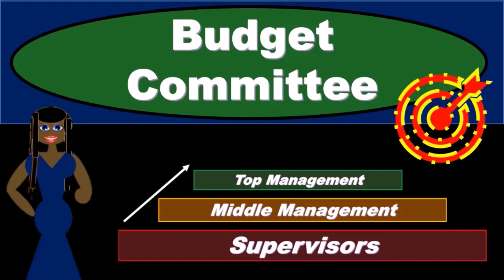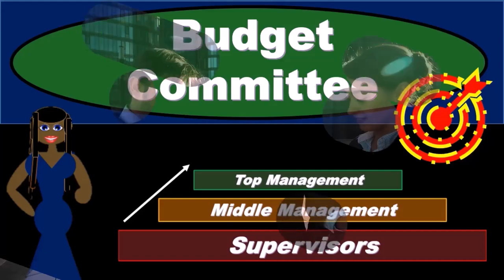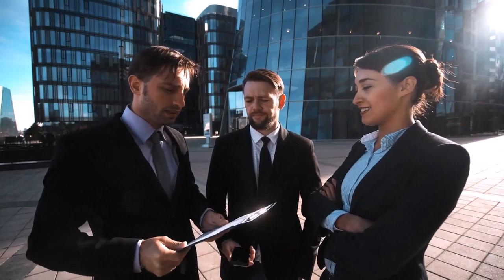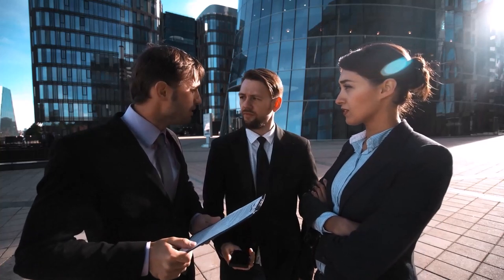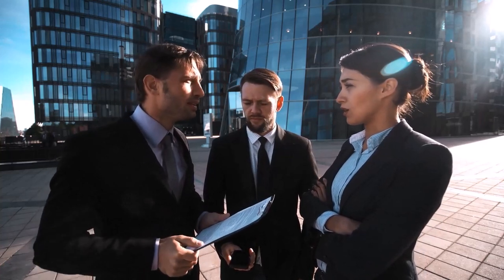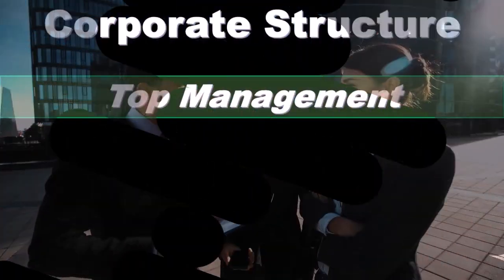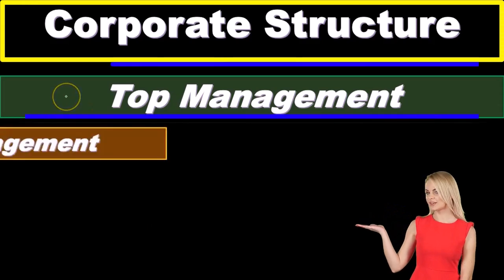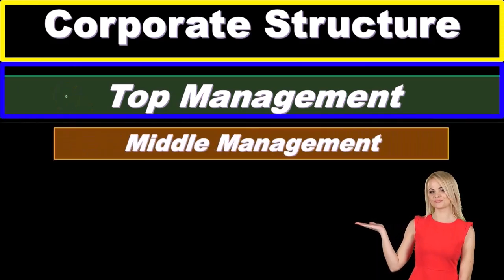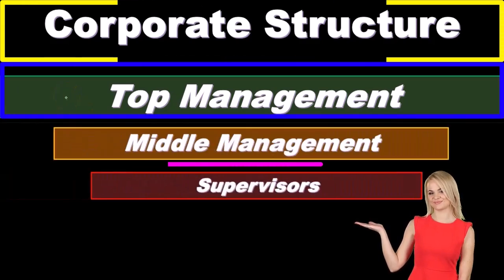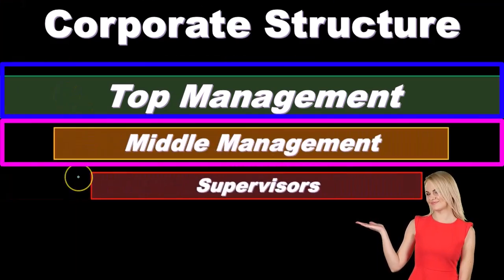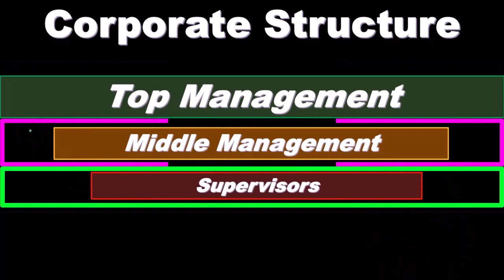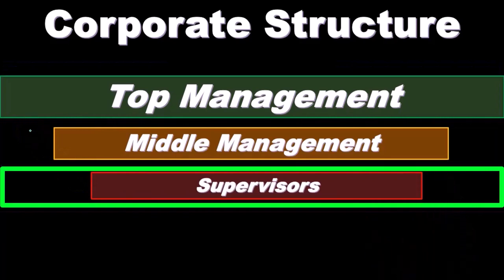In this presentation we will take a look at the budget committee as we go through the budgeting process. When we consider the corporate structure, we typically consider it as a top-down type of structure. We have the management — top management, middle management, then we have the supervisor. So we have the top management with the overarching goals and objectives.